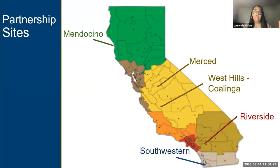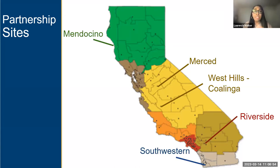In terms of the purpose of the Community of Practice, it was to address key implementation issues in expanding equitable dual enrollment, including creating a plan to increase equitable dual enrollment throughout partnerships. We looked at regional diversity in selecting sites. In the far north we have Mendocino; in the Central Valley, Merced and West Hills Coalinga; in the Inland Empire, Riverside City College; and in the south, Southwestern College. We also looked at composition of special admits, their diversity compared to the general student population, and how dual enrollment is mentioned throughout college plans.